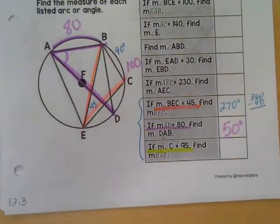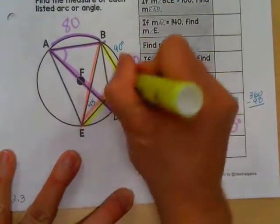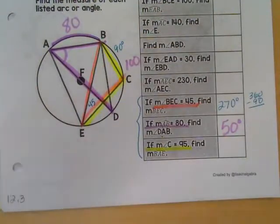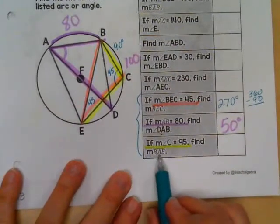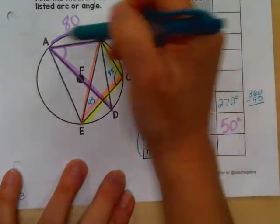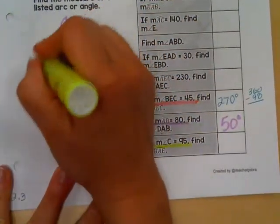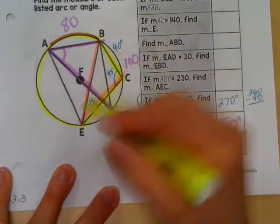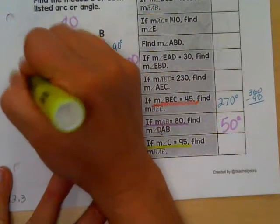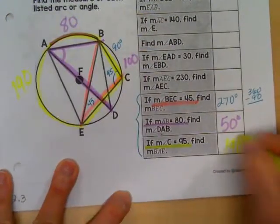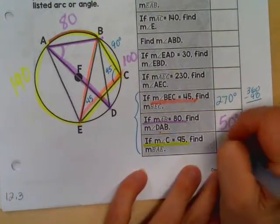And for the last one, angle C right here is 95. If that angle that they gave us is 95, they want us to find BAE, the arc BAE. Well, BAE is the arc that's intercepted. So if this angle is 95, the arc has to be twice as big. 95 times 2 means that last arc that we're looking for is 190. A little hard to read that. 190.